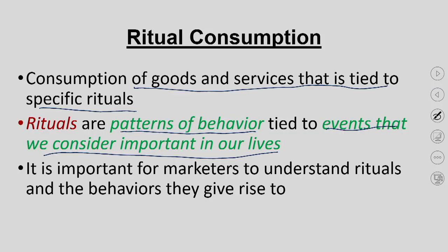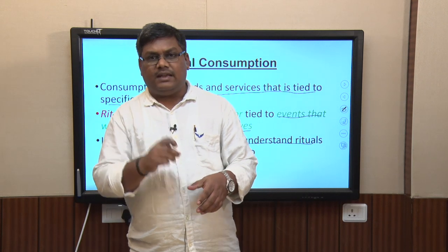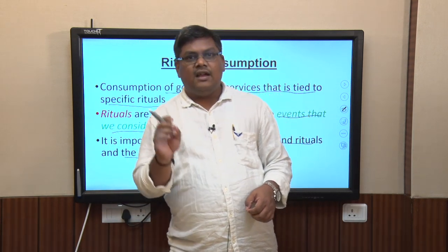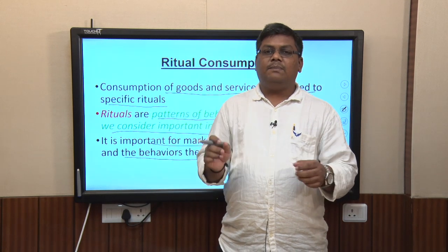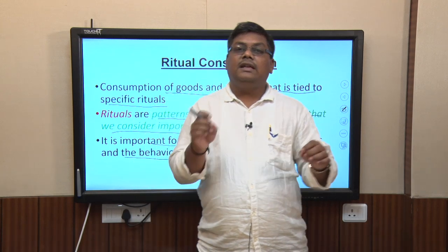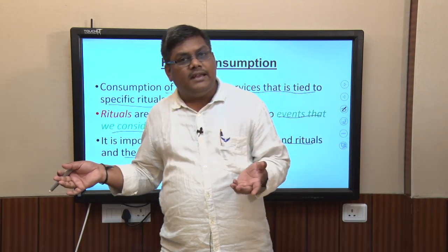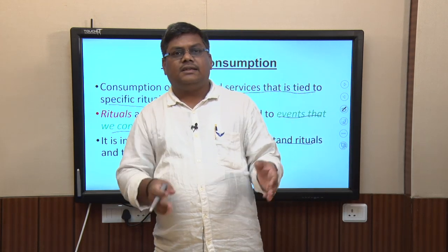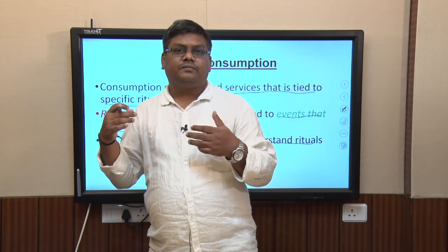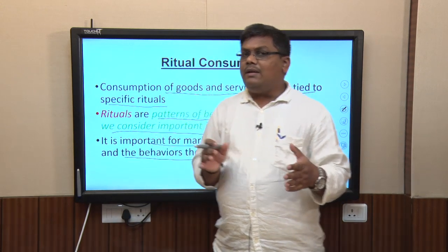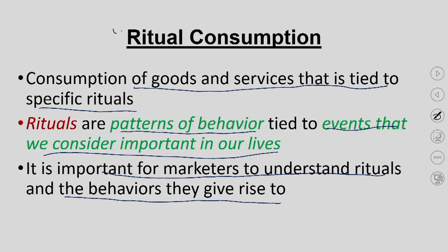What is important for the marketer to understand is the ritualistic consumption and the behaviors it gives rise to. Once a marketer understands how people do ritualistic consumption and the kind of behavior associated with it, they can promote their product accordingly. There are companies which cater only to birthdays and companies which cater only to weddings. The marketer has to understand in which way this ritual is going to happen, so they can promote their particular product or service benefits out of it.